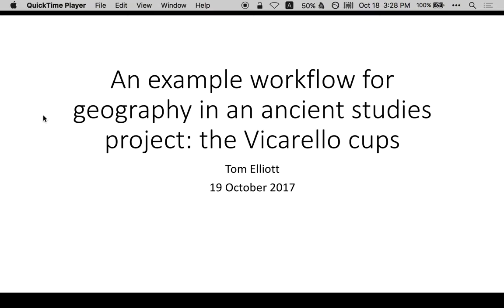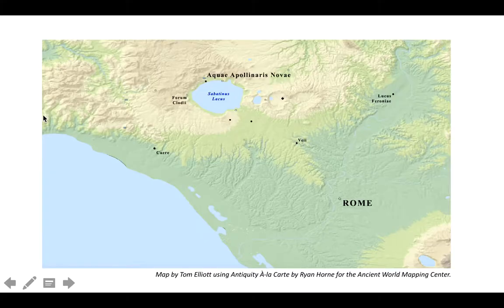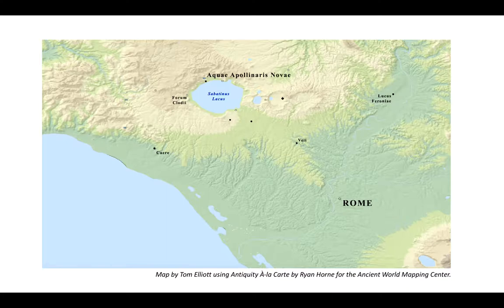We'll be taking as an example a really interesting set of objects called the Vicarello cups. The name is a modern one — we don't know what these things were called in antiquity. This modern name takes the Italian place name associated with the site of discovery, which is just north of the ancient Sabatinus Lacus in Italy, to the north and west of Rome.